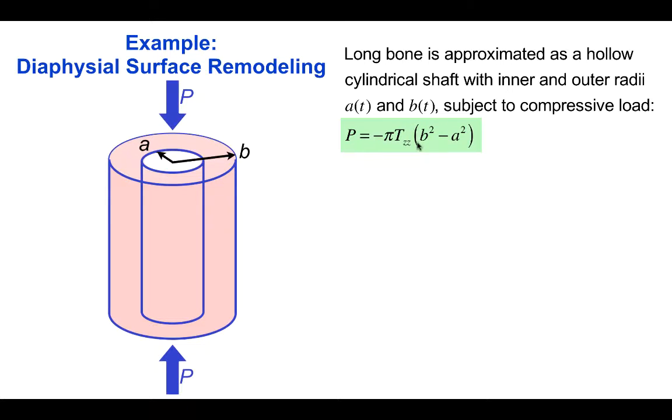Where π(b² − a²) is the cross-sectional area and the minus sign is because the axial stress is compressive. In linear elasticity, the axial stress T_zz is proportional to the axial strain ε_zz by the Young's modulus E and is the only non-zero stress component in this problem.